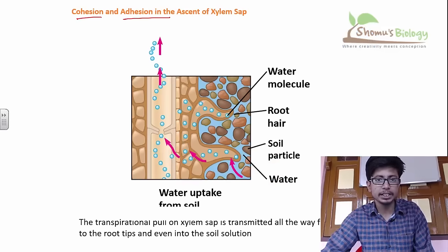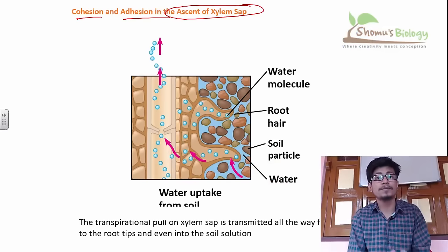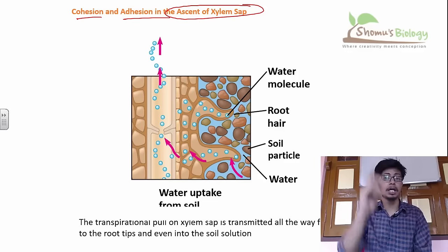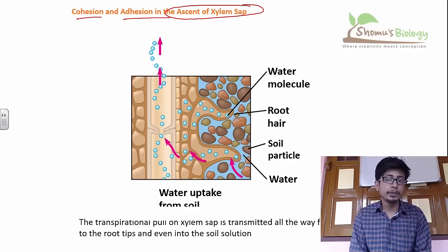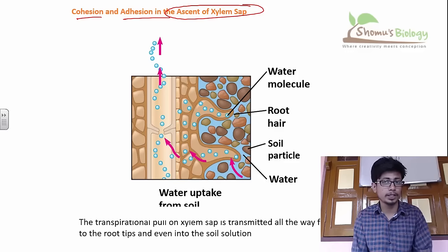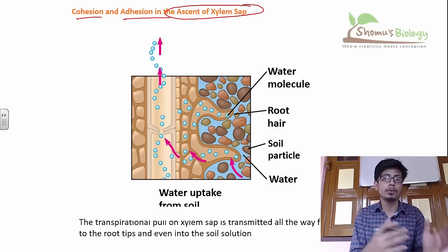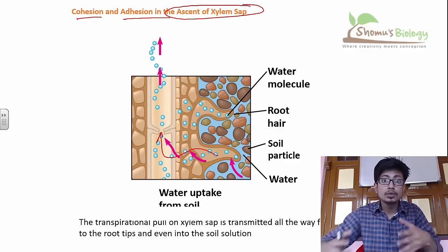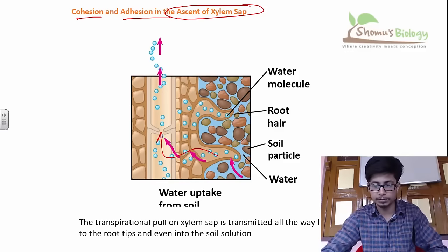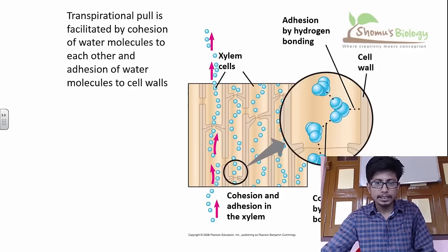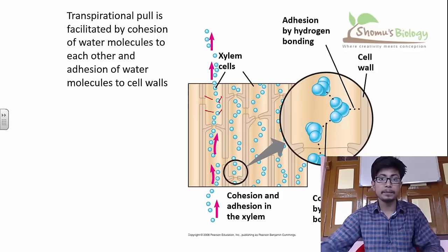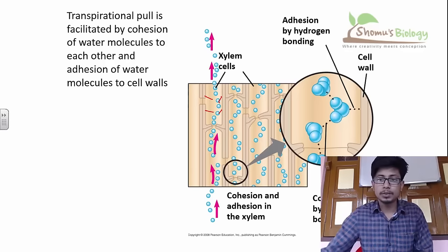We call this process the ascent of sap — sap being water and nutrients combined. So sap is ascending. It is maintained due to two different forces: the cohesion forces between the water molecules, and the adhesive forces between the water molecule and the wall of the xylem. Water molecules moving from the root, driven by pressure towards its minimum, slowly move like a chain due to cohesive force, while adhesive force towards the wall keeps them steady through the xylem tube towards the top.